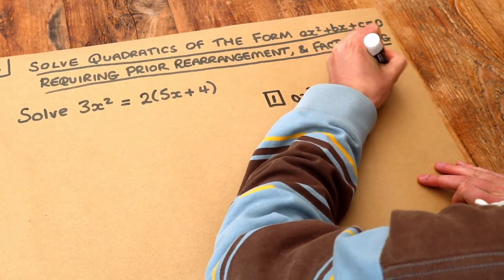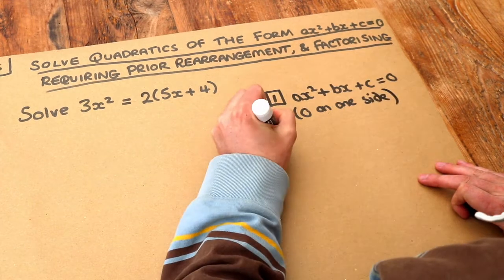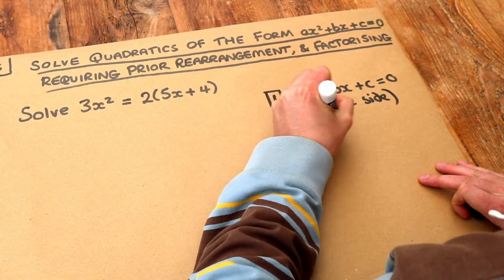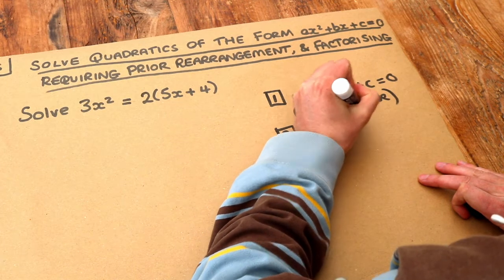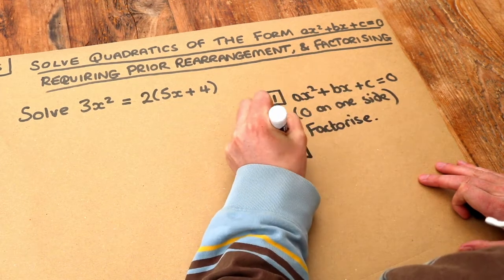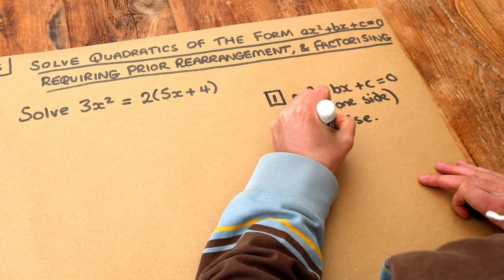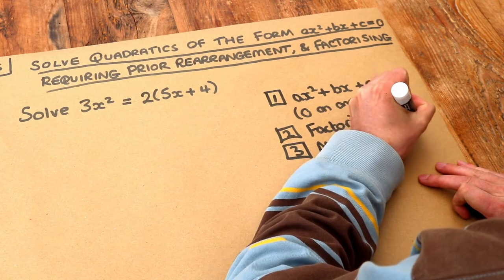Then we want to factorise it, and then from there we can make each term zero. And we'll see what this means as we go along.